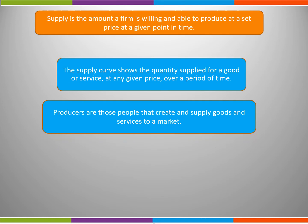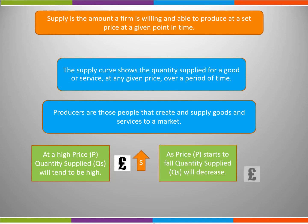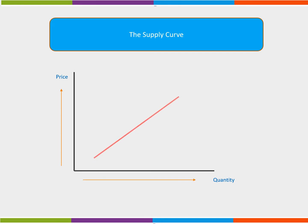At a high price, quantity supplied will tend to be high. As price starts to fall, quantity supplied will decrease. We can illustrate this diagrammatically. As the price for a product rises, quantity supplied will increase.